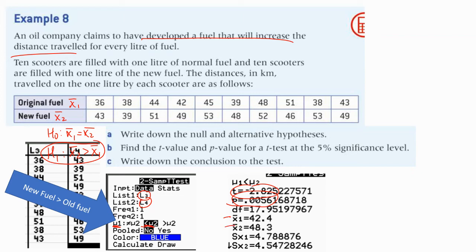The second average is higher than the first — is it statistically significant? That's what the t-test determines; there's a big chart of values but it's all stored in your calculator so you don't need to worry about that. Is that p less than five percent? It's 0.00562, which is definitely less than five percent. The p is low, reject the null. We are rejecting the null hypothesis — the new fuel has a significantly higher average than the old at the five percent significance level.